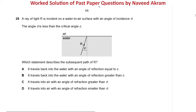Our next question is from October/November 2020 Paper 1 Variant 1, question number 28. A ray of light R is incident on a water-to-air surface with an angle of incidence theta. The angle theta is less than the critical angle C. Which statement describes the subsequent path of R? Please pause the video and answer. Since theta is less than the critical angle, there will be refraction, and as the ray moves from water to air — denser to rarer medium — it should move away from the normal.